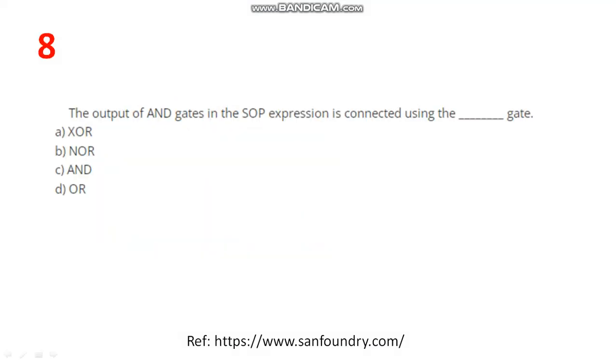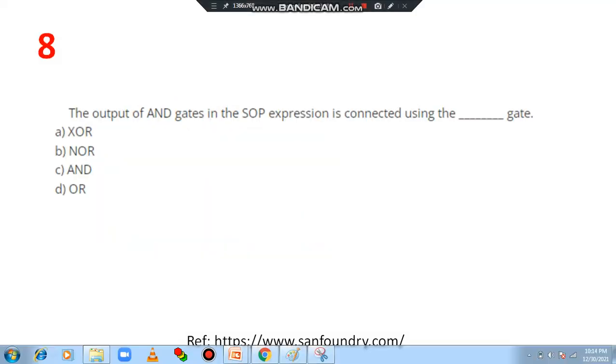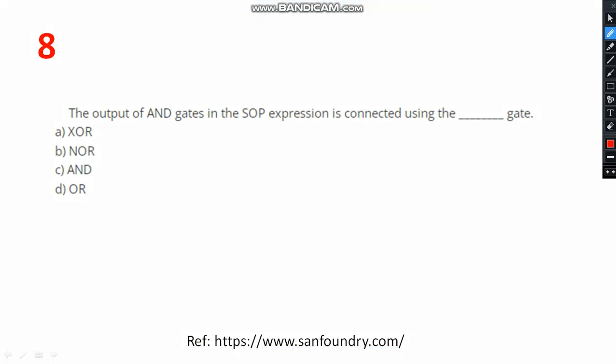Question number 8. The output of AND gates in the SOP expression is connected by using dash gate. You know that SOP sum of product, AB plus BC for example. F is equal to AB plus BC. The question implies A dot B. This is product, sum of this product SOP, right? This is AND actually, here AND gate is required. This dot, wherever dot is there AND is required to correlate.